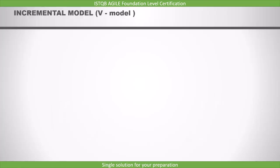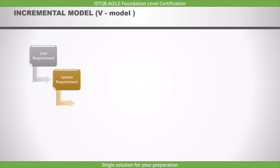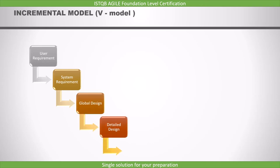Let's first see the linear model, sometimes called an incremental model. The V model is an example of the incremental model. In this model, first we have a user requirement which is provided by the customer. Then, from the user requirement, we write the system requirement. Once the system requirement is in place, we will write the global design and the detailed design. And once the design is done, we will start implementing the software.